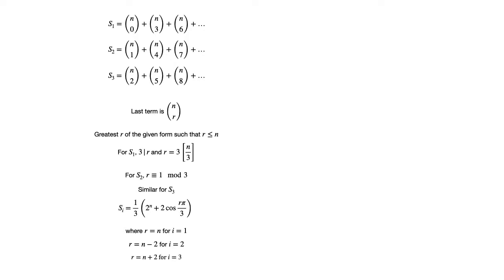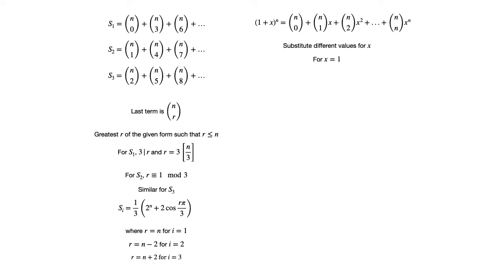Taking our first steps, let us recall the familiar expansion for (1+x)^n using the binomial theorem. We shall proceed by substituting different values for x. For x equals 1, the expansion collapses to the familiar identity for 2^n as the sum of the binomial coefficients in the nth row of Pascal's triangle. We call this equation 1.